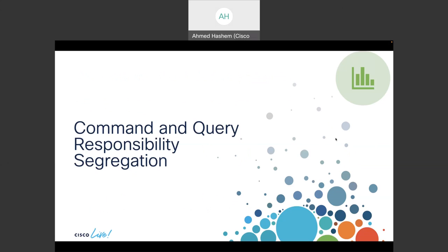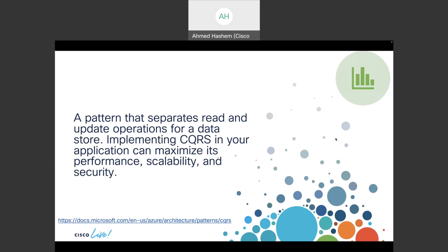I'll start with the first design pattern: Command and Query Responsibility Segregation, or CQRS for short. The purpose of this pattern is to separate read operations from update operations when it comes to your data storage. If you have a database, by default you do all operations on it. The CQRS implementation is to have another copy — a read-only copy — that can be used only for read operations, while your main database handles the rest. The benefits are that you maximize performance and scalability, and you can also secure your data with read-only access to a particular node.